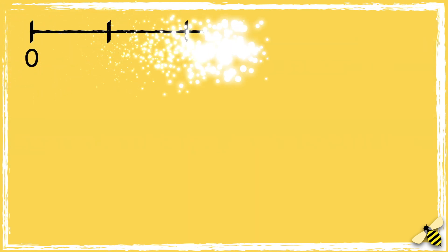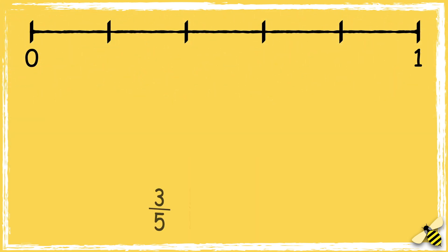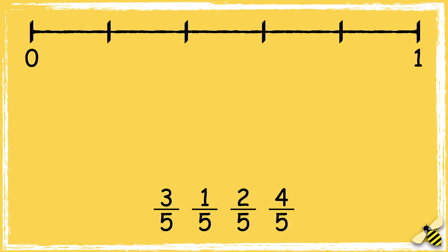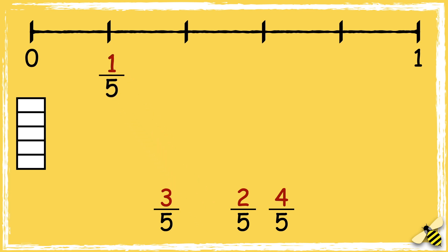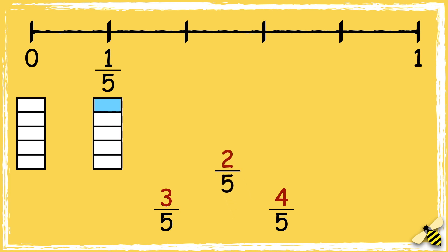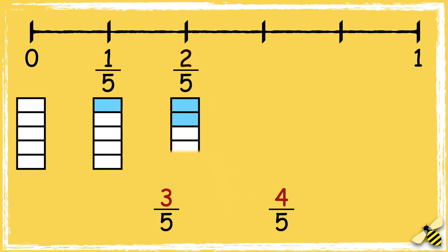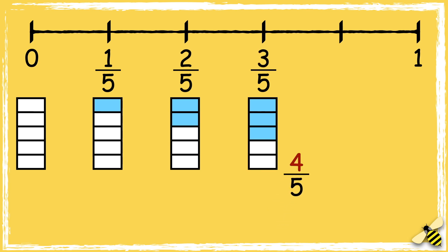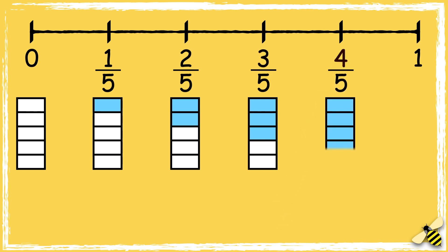Here is a number line. We're going to put these fractions in order from the smallest to the largest. When fractions have the same denominator, we can compare them by looking at their numerators. So let's start with 0, or 0 fifths. Then we have 1 fifth, 2 fifths, 3 fifths, 4 fifths, and 5 fifths, or 1 whole.